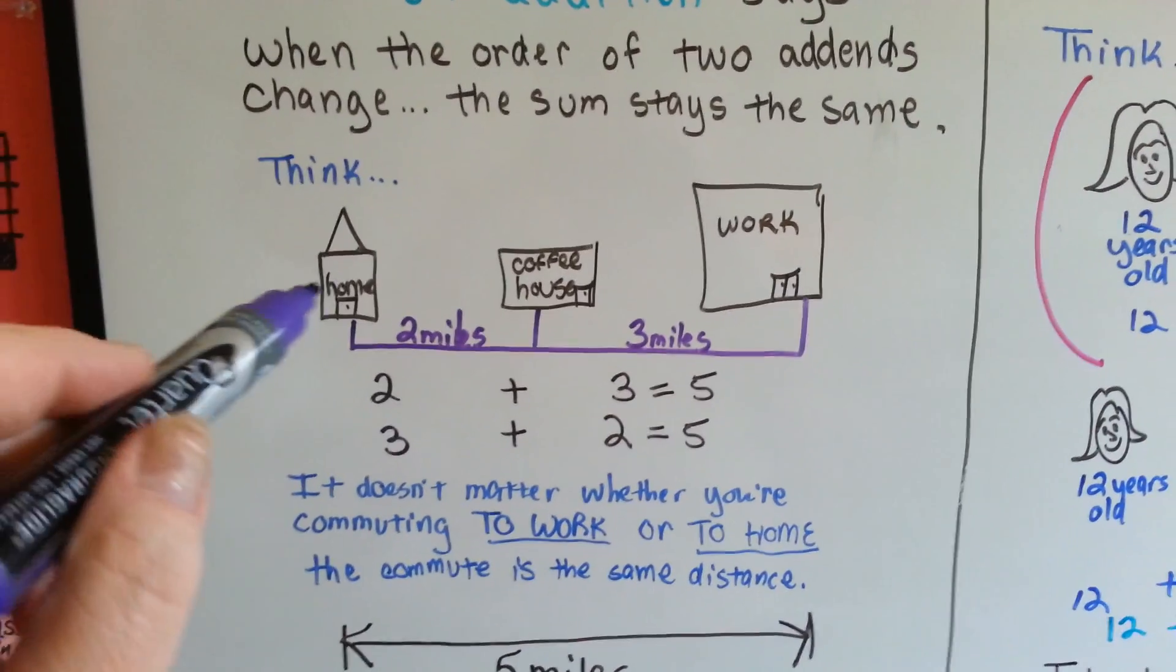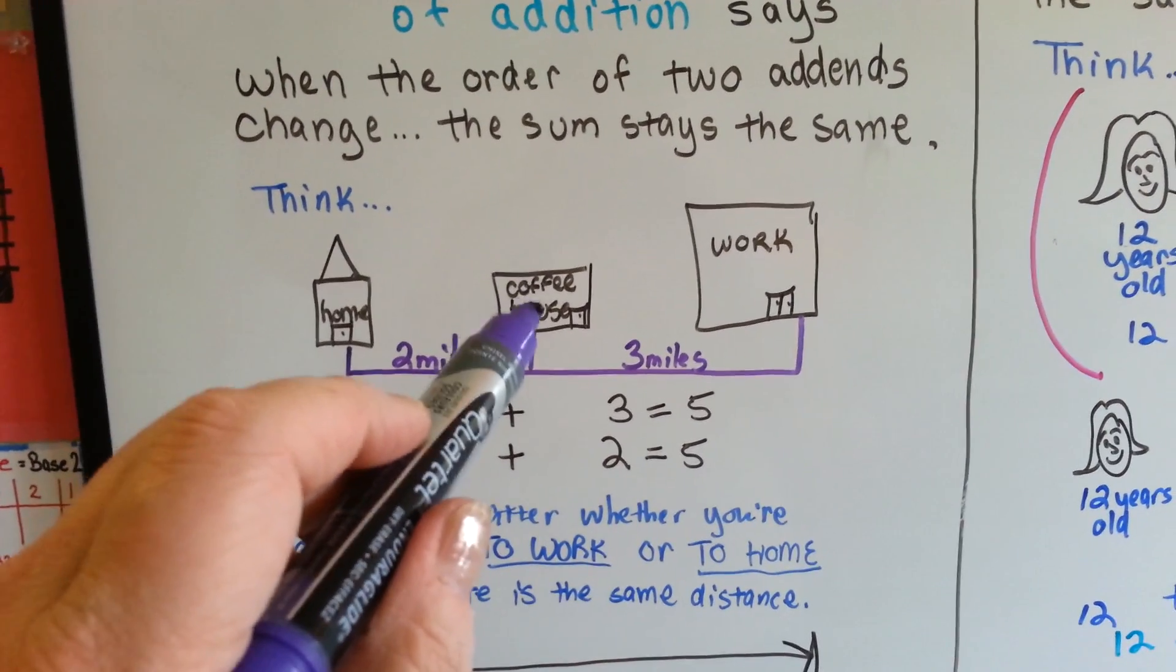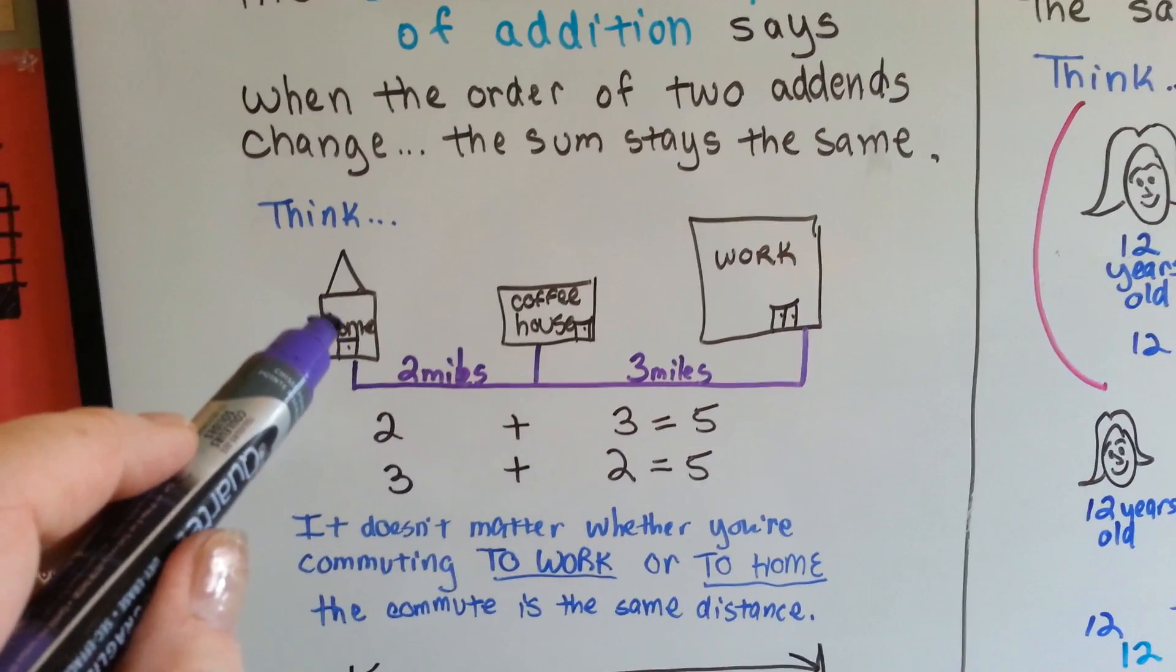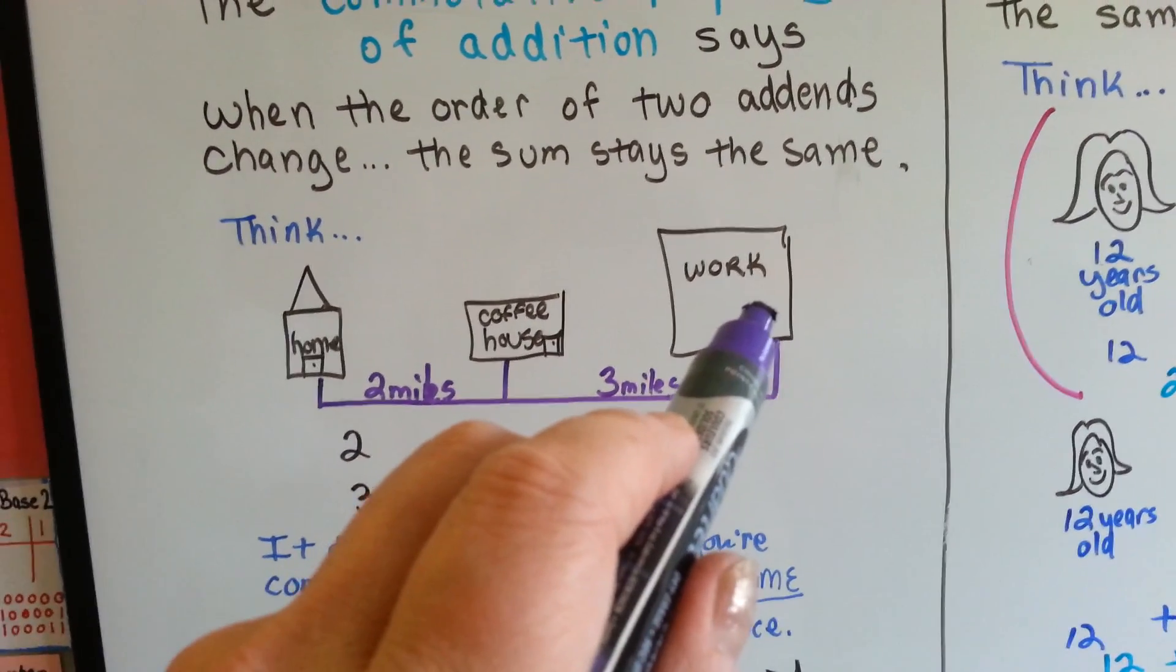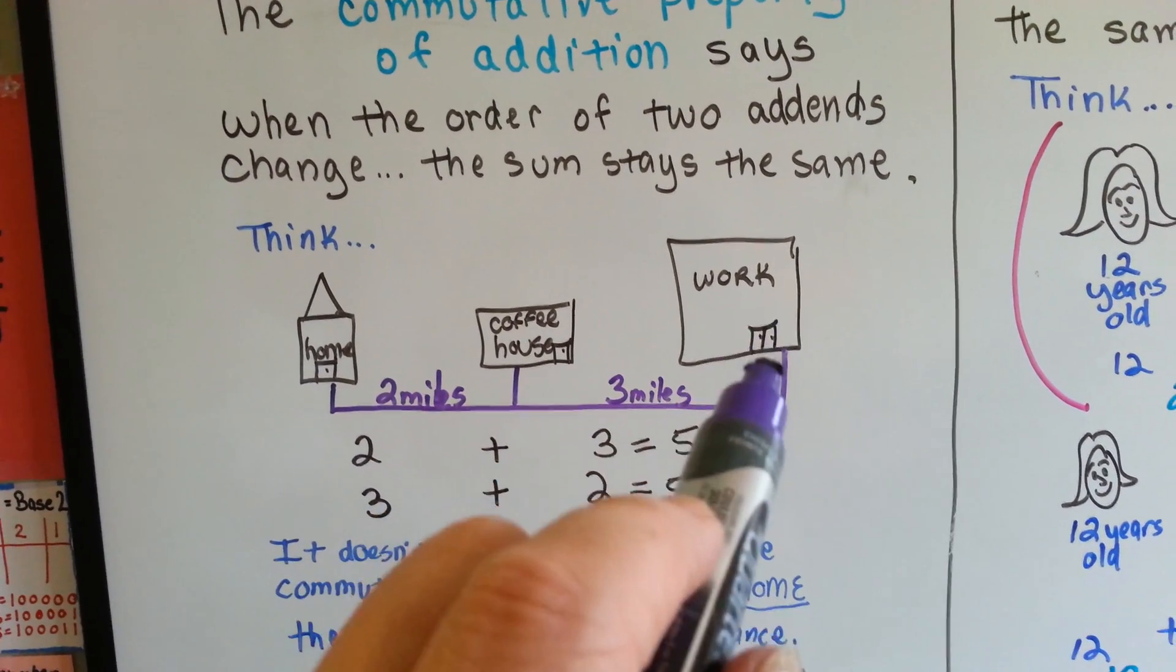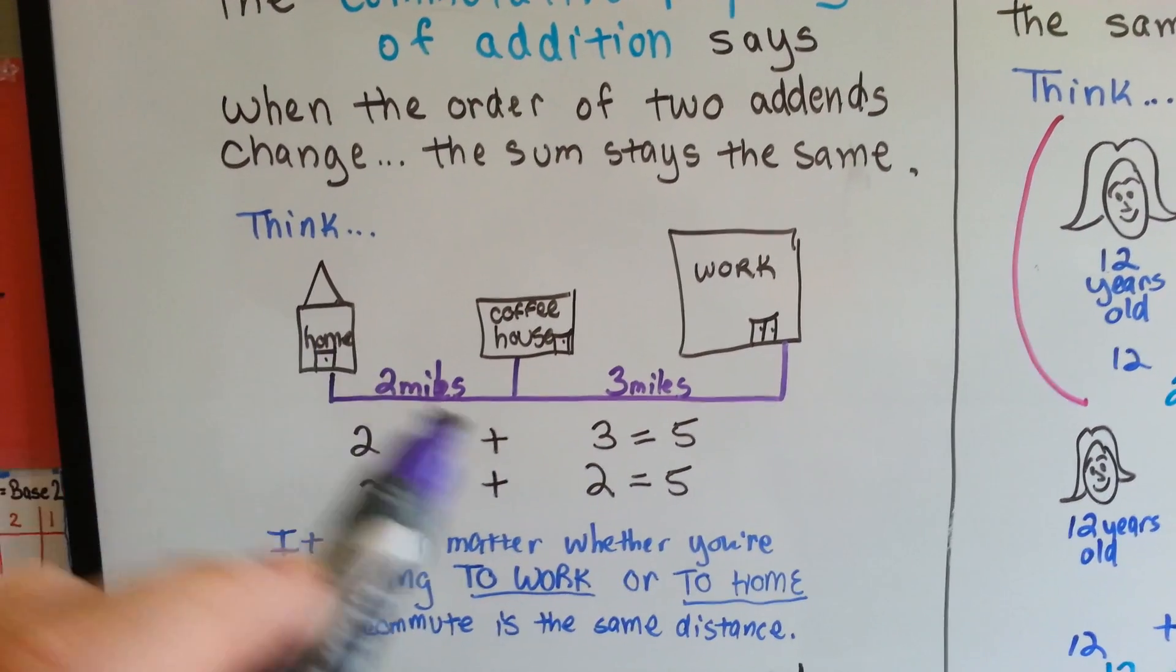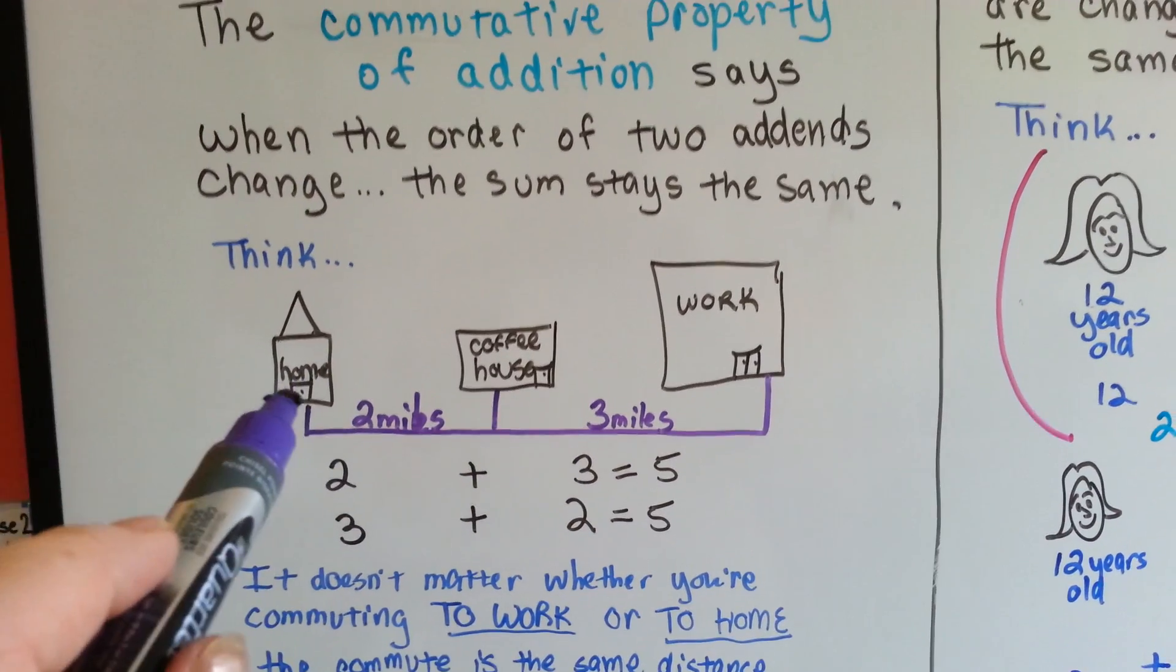Think of it like this. If this is your home, and here's a coffee house that you like to stop at, and then here's work or school, if you go from home the two miles to the coffee house and stop, and then go the three miles to work, it's going to be five miles to get to work. When you come home from work and you stop at the coffee house and then home, it's still five miles. Two plus three is five, and three plus two is five.